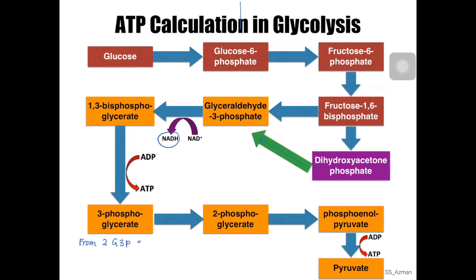Adding the results from both glyceraldehyde-3-phosphate molecules, we get two molecules of NADH produced and four molecules of ATP. But remember, during the investment phase we borrowed two ATP molecules, so we have to subtract two ATPs. The net result from glycolysis is two molecules of NADH and two molecules of ATP produced from one glucose molecule.